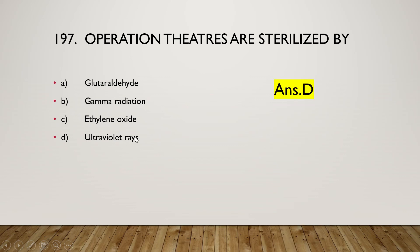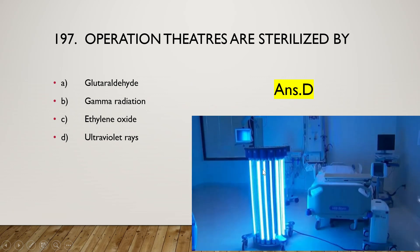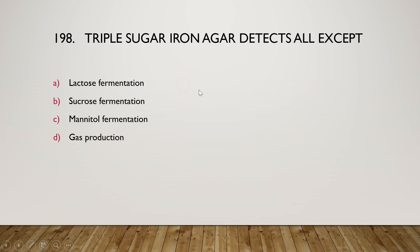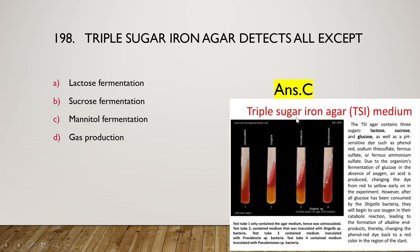Next question: operation theaters are sterilized by glutaraldehyde, gamma radiation, ethylene oxide, or ultraviolet rays? The right answer is option D, ultraviolet rays are used to sterilize operation theaters. Next question: triple sugar iron agar detects all except lactose fermentation, sucrose fermentation, mannitol fermentation, or gas production? The right answer is option C — triple sugar iron agar does not detect mannitol fermentation. The three sugars in this agar are lactose, sucrose, and glucose, and iron is also present.